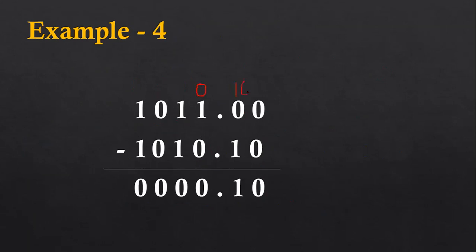Moving to example number four. The base two will be available here as one zero. So if we subtract one from two, the result will be one. Zero minus zero is zero, one minus one is zero, zero minus zero is zero, and one minus one is zero. So this way example number four has been subtracted.